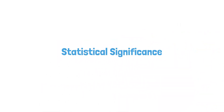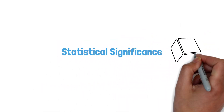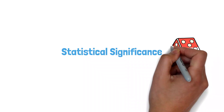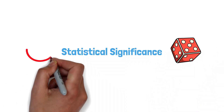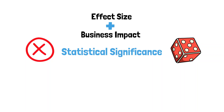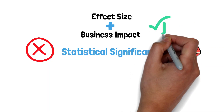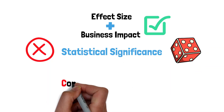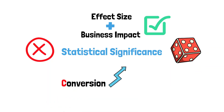Statistical significance says the effect is unlikely by chance — it doesn't say it's useful. Pair it with effect size and business impact. Also scan guardrails: if conversion rises but refunds spike, the win isn't a win.